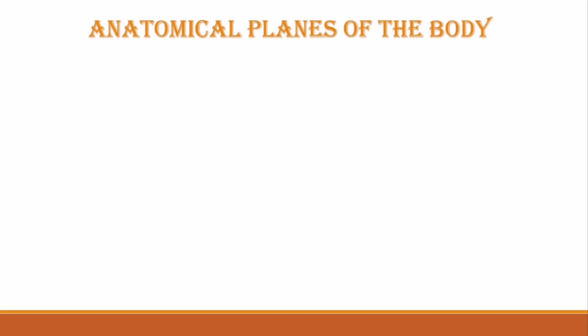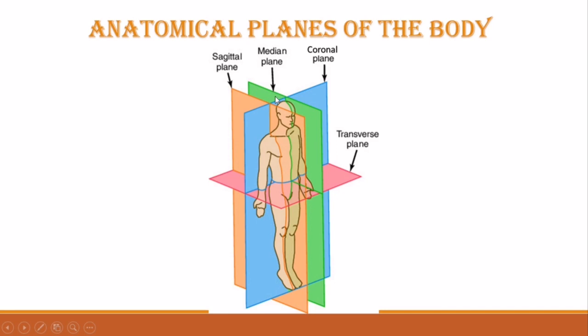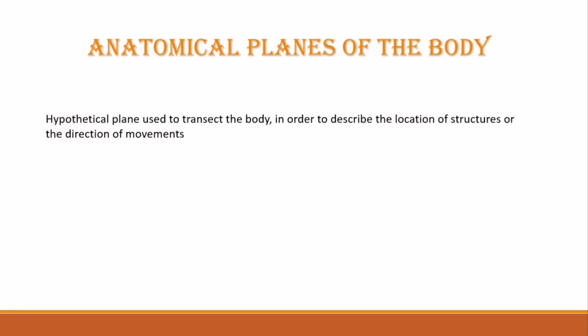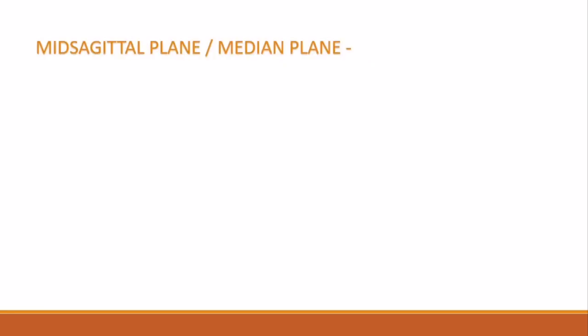Now let's move on to the anatomical planes of the body. Four fundamental imaginary planes are frequently used to depict structural arrangement in the body: median plane, sagittal plane, coronal plane, and transverse plane. An anatomical plane is a hypothetical plane used to transect the body in order to describe the location of structures or the direction of movements.